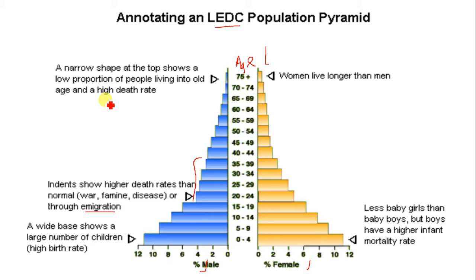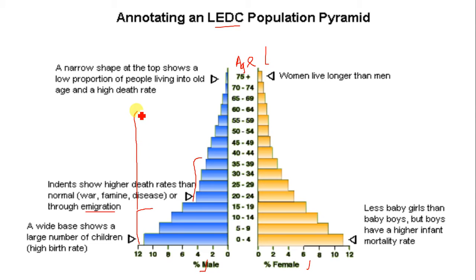On the LEDC population pyramid, young dependents are those between the ages of zero to 16 approximately. From 16 up to 65 is the economically active group. From 65 and above is the old dependent population.